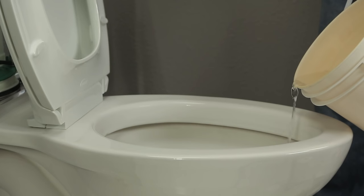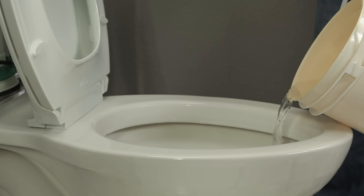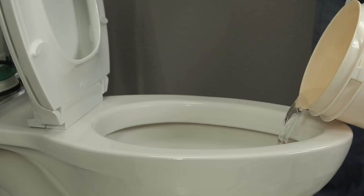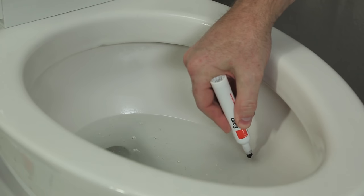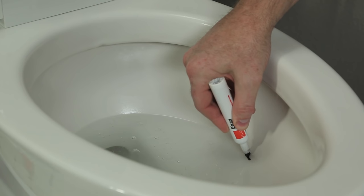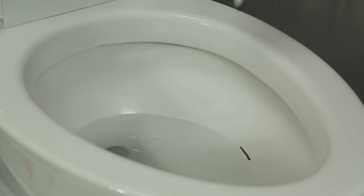Save even more water and money by adjusting the water level in the bowl to the proper level. To determine the proper water level, slowly pour a gallon of water into the bowl and wait 30 seconds for the water level in the bowl to settle. Mark the water level inside the bowl. A dry erase marker works well and is easy to wipe away.